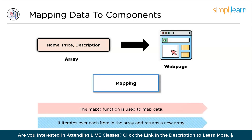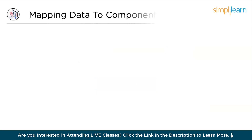To map data to components in React, we typically use the map function. This function iterates over each item in the array and returns a new array of React components. Here's a simple example.